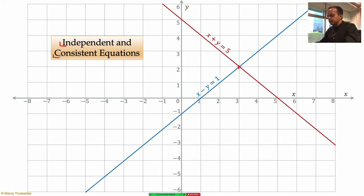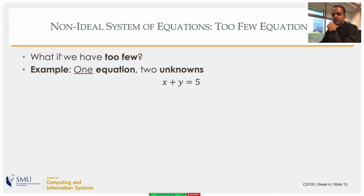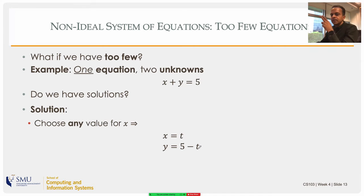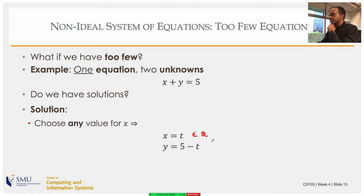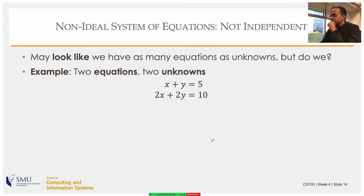If you have only one equation and two unknowns — too few equations — you can find any value of x and y satisfying it as a solution. Suppose you choose x equals t, then y equals 5 minus t is a solution, because it lies on the line. Any value of t in R is valid, so you have infinitely many solutions.